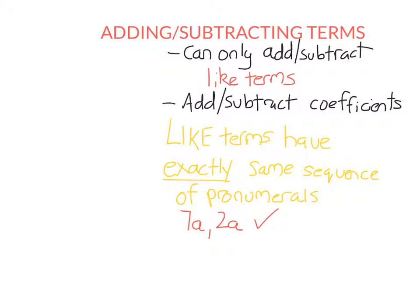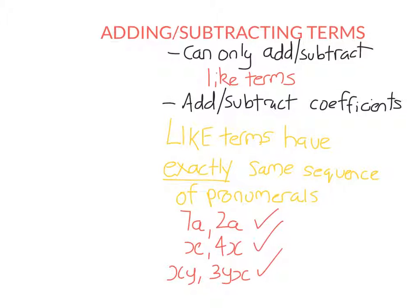So I could add these together or subtract one from the other. Similarly, if I have something like x and 4x, they are like terms because they both have 1x. Now if I have the two terms xy and 3yx, they're also like terms. The reason is they both have 1x and 1y. Remember, if no operation is written, it's times — so xy means x times y. The order in which you multiply doesn't matter; 7 times 2 and 2 times 7 give you the same answer. So it doesn't matter about the order they're written in, just as long as they have the same pronumerals. These two are like terms even though in one the x is written first and in the other the y is written first. They both have 1x and 1y.